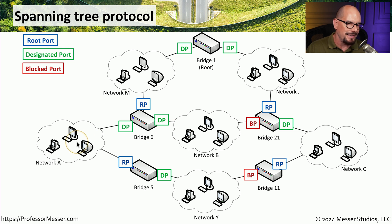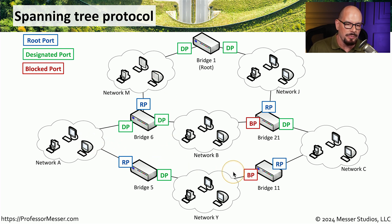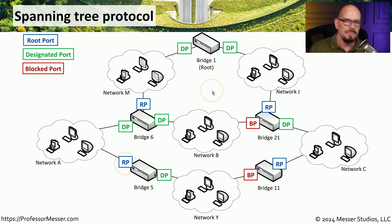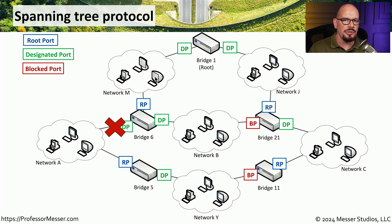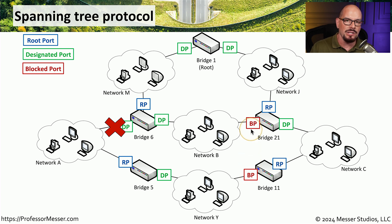For example, if we want to connect from network A to a device in network M, we can simply pass through bridge six. There is a blocked port that would prevent us from looping around the network, thanks to Spanning Tree protocol. This configuration works great and we can communicate between network A and network M without a problem. But if we lose connectivity between network A and bridge six, we now have no way to communicate because those originally blocked ports are still blocking.